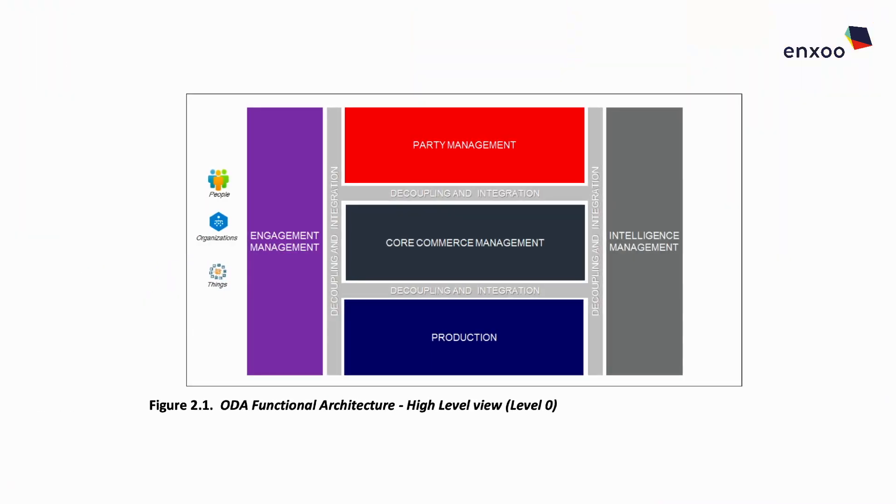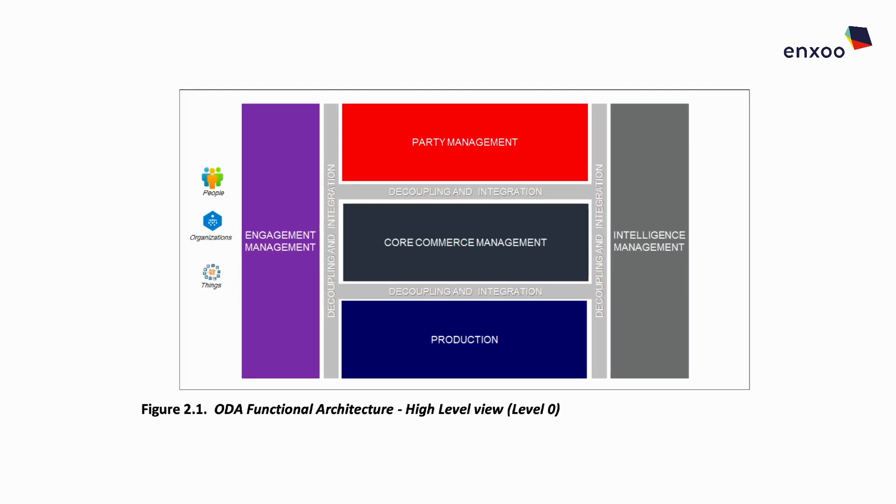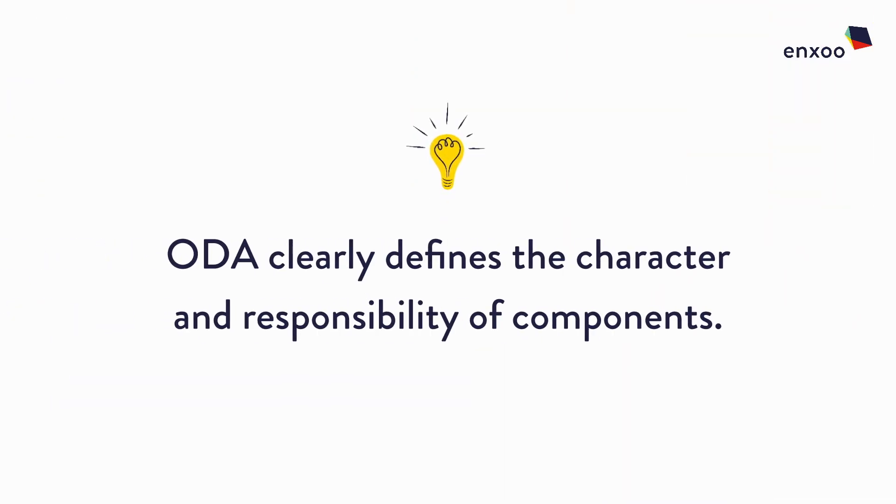Takeaway number two: new ODA functional blocks. ODA defines so-called functional blocks as logical groupings of these components. I wanted to bring this up because it's an interesting evolution of the traditional functional architecture layers that define business and operational layers — BSS and OSS. At the highest level in ODA, we have five functional groupings: Engagement Management, Party Management, Core Commerce Management, Production, and Intelligence Management. Within each of those groupings there are multiple components talking to each other. There is also a sixth functional block called Decoupling and Integration, which acts like a glue keeping everything together.